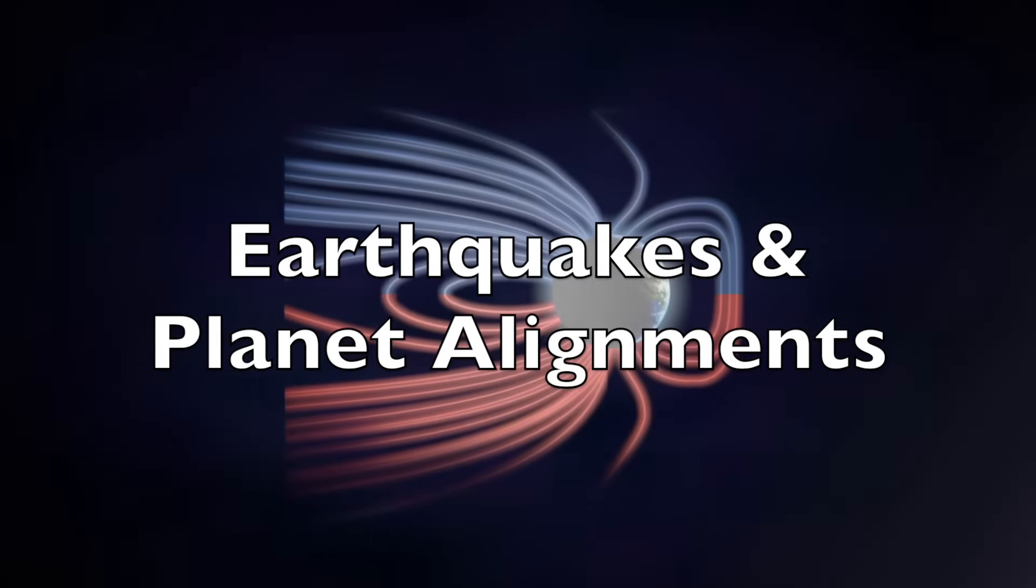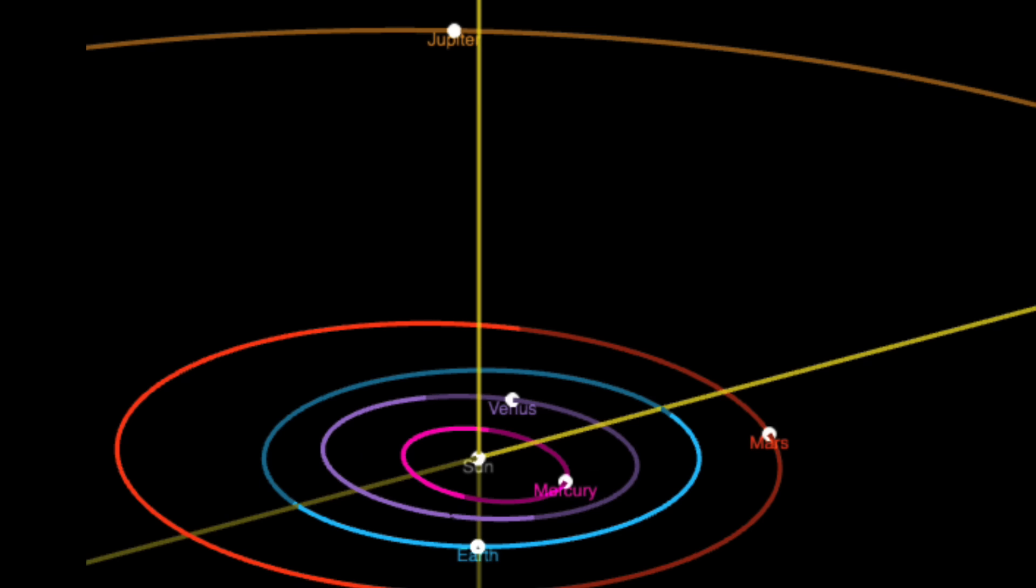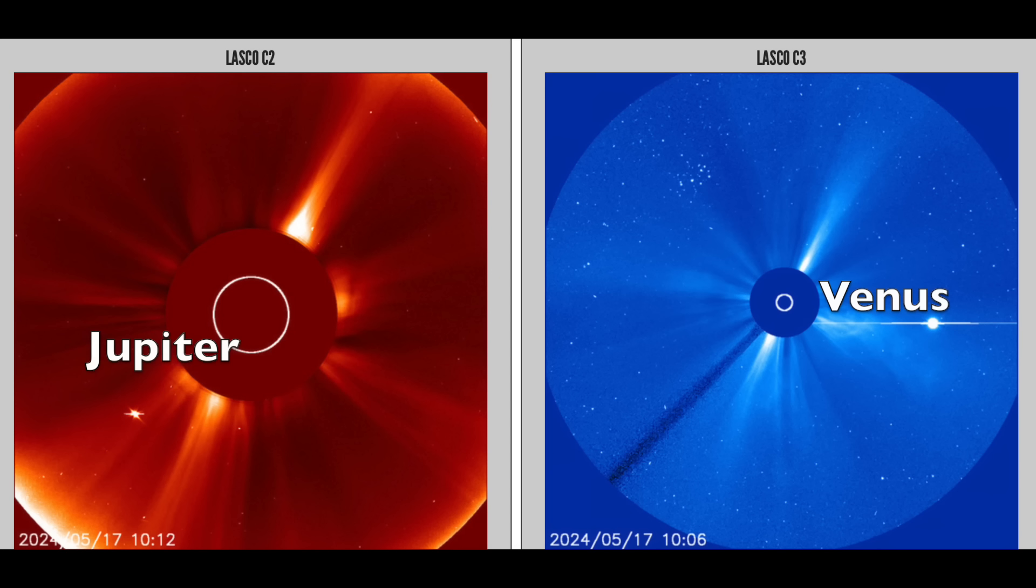Good afternoon, folks. This morning we went over the planetary alignments about to occur with Jupiter and Venus heading behind the Sun from Earth's perspective. Those are the ones visible on Soho coronagraphs right now.